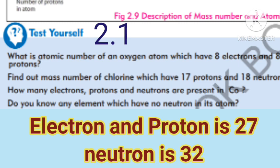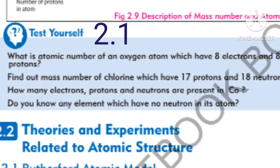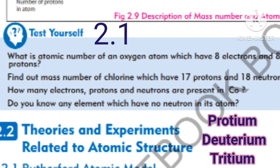The last question is: do you know any element which has no neutrons in its atom? Hydrogen has 3 isotopes — protium, deuterium, and tritium. Protium has no neutrons, and this is the only element which has an isotope with no neutrons.